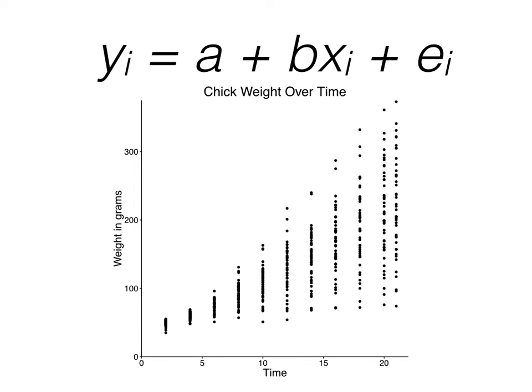The data presented here looks at how the weight of baby chicks in grams changes over time. Time here is measured in days. As you can see, there appears to be a positive trend where as more time passes, the chicks gain weight. Indeed, we can draw a line that shows this increase.